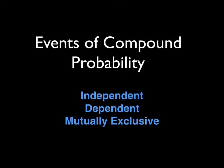So the events of compound probability — there are three major things we call the events of compound events. They are independent, dependent, and mutually exclusive. We are going to discuss each of them and give you examples as to how we are going to calculate the probability of each of these kinds of events.